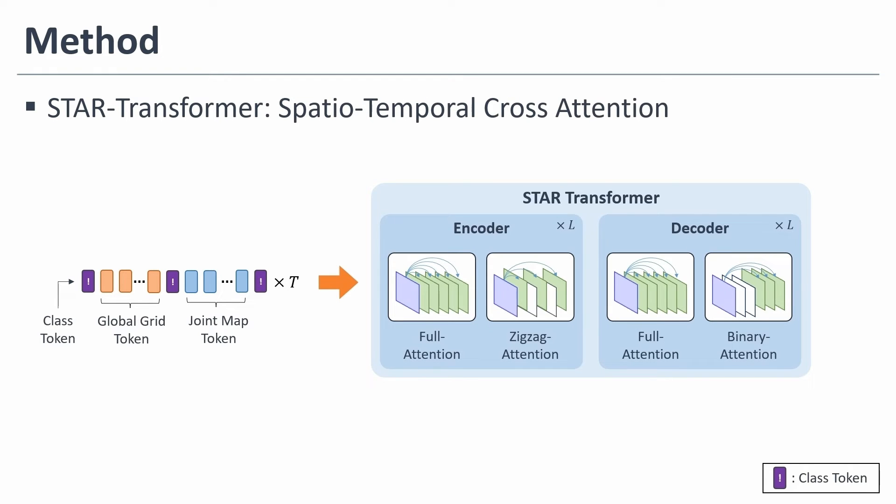STAR Transformer consists of an encoder and a decoder. We design a spatial-temporal attention mechanism called zigzag and binary attention and use it with full attention. After averaging the learned multi-class tokens, the final result is predicted with a simple MLP.